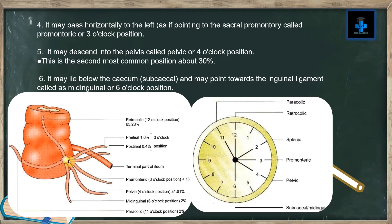To summarize the positions: the paracolic or 11 o'clock position, the retrocolic or 12 o'clock position which is the most common, the 3 o'clock or promontoric position, the pelvic or 4 o'clock position, and the mid-inguinal or 6 o'clock position, possessed by almost 2% of individuals.